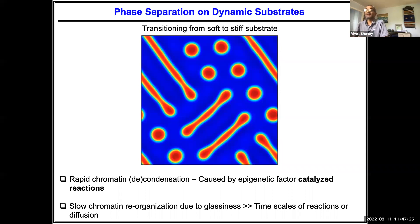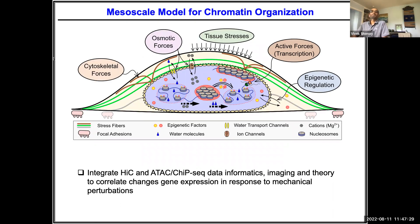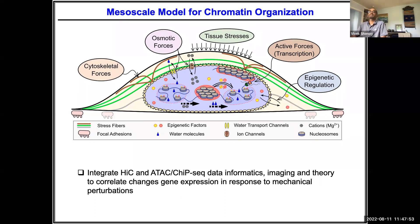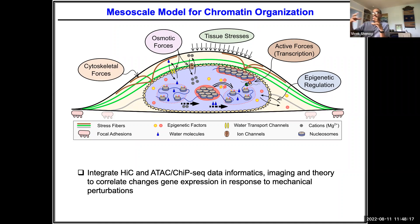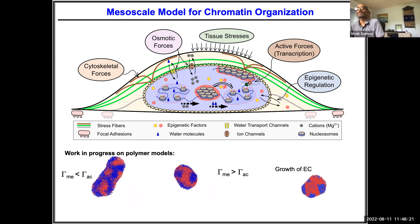What I've shown primarily is that cytoskeletal forces and epigenetic regulation can change the way DNA is organized. I didn't talk about osmotic forces, though we've been analyzing data on that. We also have collaborators who have applied mechanical forces — squeezing the nucleus, applying shear, tension, compression — to see how that changes the amount of hetero versus euchromatin, and how turning active forces on or off via transcription affects organization. Going forward, our goal is to integrate Hi-C, ChIP-seq, etc., to identify which DNA segments are in heterochromatic versus euchromatic states.